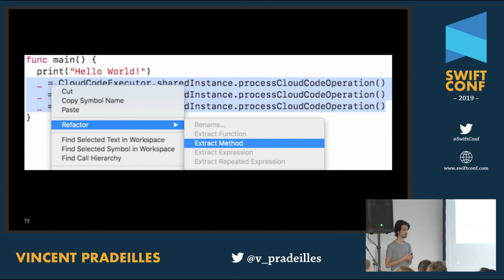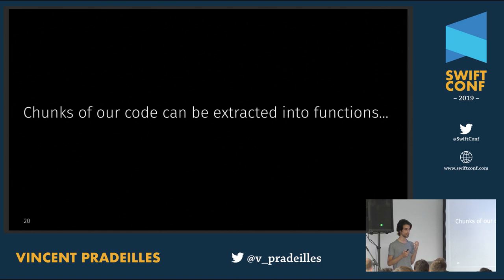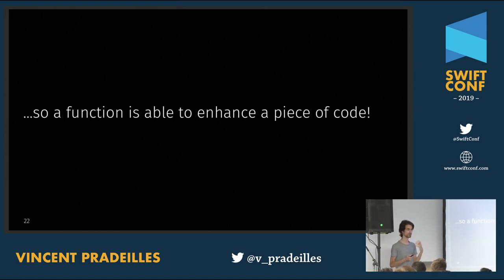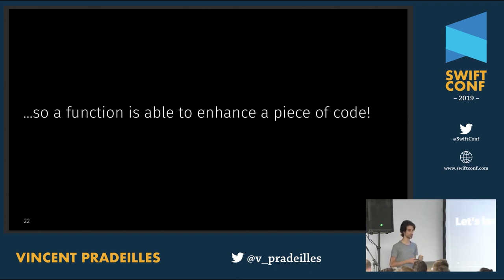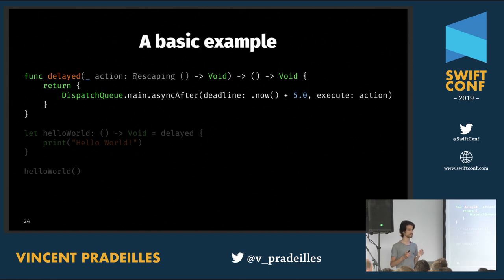In Xcode, there's a refactoring tool that lets you extract a chunk of code as a method. Since a method is essentially a function, we can extract pieces of code into functions. We can also write functions that take functions as arguments and return other functions. So maybe we could write functions that take a piece of code, enhance it with new functionality, and return the enhanced version.